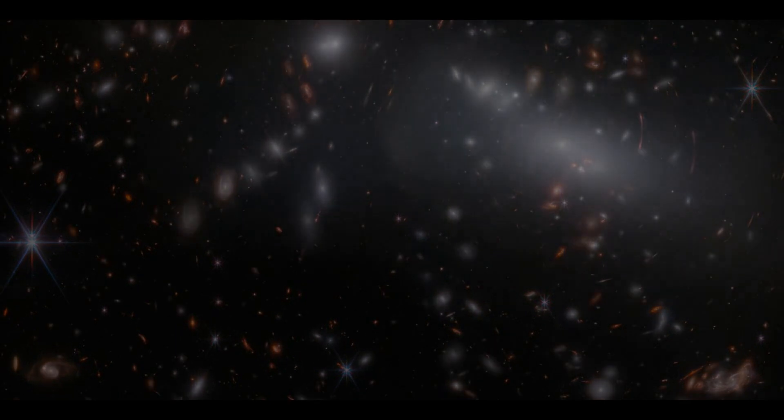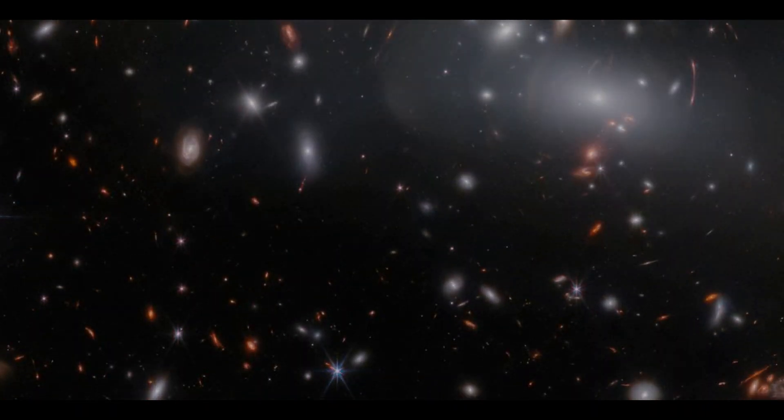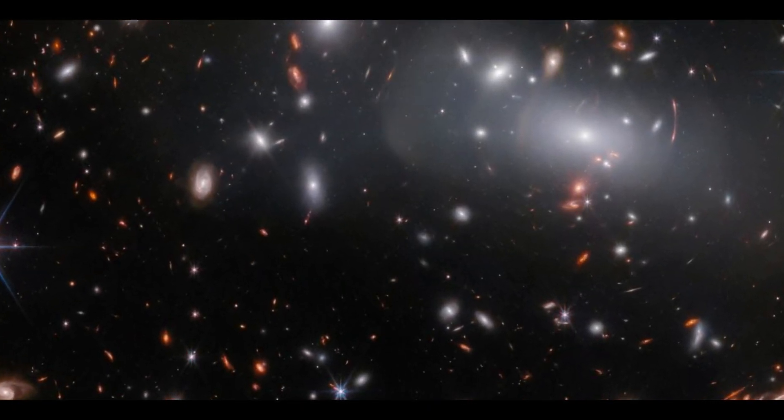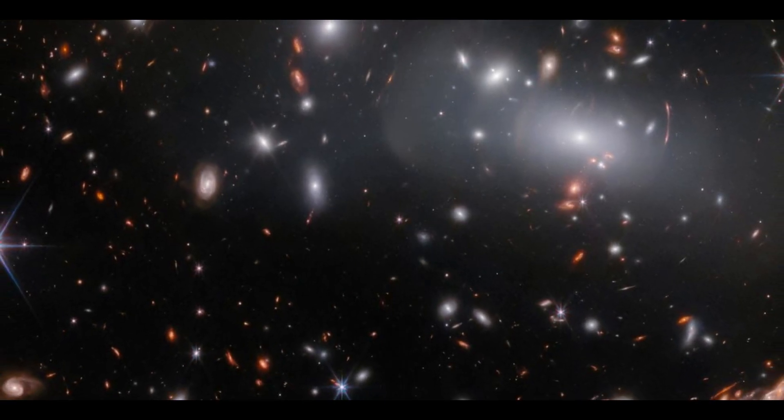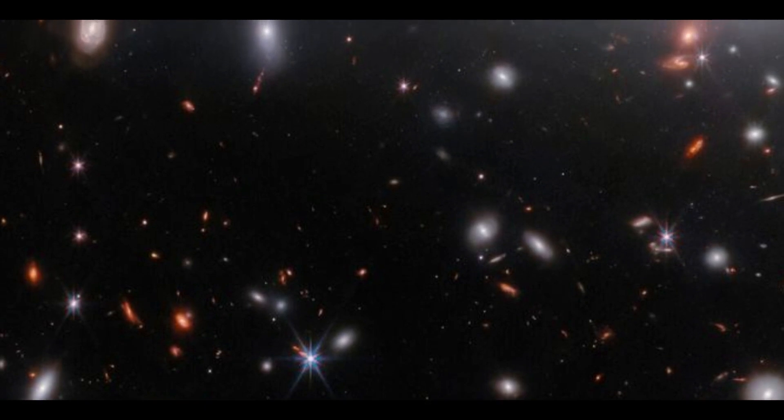Einstein predicted in his general theory of relativity that mass warps the very fabric of space and time, or space-time. This is similar to putting a ball on a stretched rubber sheet and generating a dent in the sheet. The greater the mass of the ball, the more warping it causes. This is also true for space-time.